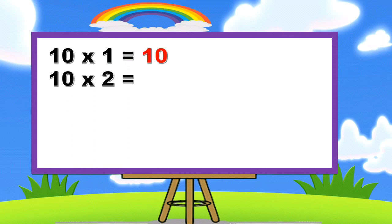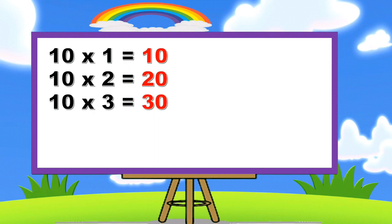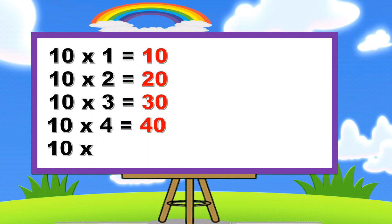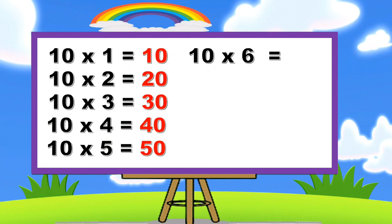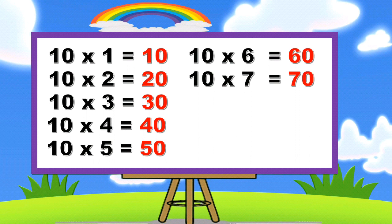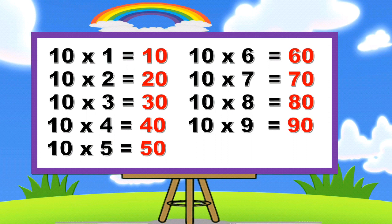Ten ones are ten, ten twos are twenty, ten threes are thirty, ten fours are forty, ten fives are fifty, ten sixes are sixty, ten sevens are seventy, ten eights are eighty, ten nines are ninety, ten tens are one hundred.